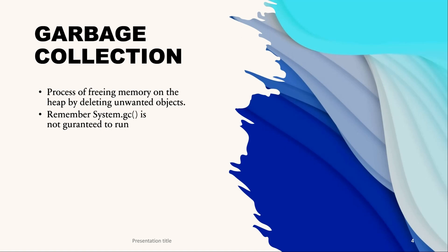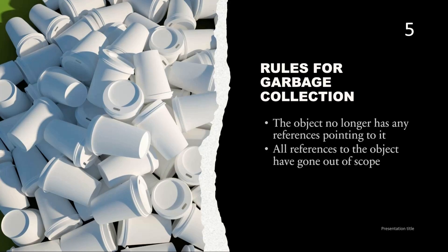The more interesting part of garbage collection is when the memory belonging to an object can actually be reclaimed. Java waits patiently until the code no longer needs that memory, and objects will remain on the heap until they are no longer reachable. An object is no longer reachable when one of two situations occur: first, the object no longer has any references pointing to it; and second, all references to the object have gone out of scope.